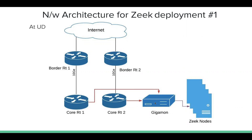Gigamon is a load balancing device that makes sure it sends the stream of one connection to one Zeek box, doing symmetric hashing - because Zeek has to see the complete connection stream. Gigamon was load balancing traffic to our other IDS systems and primarily our Zeek nodes. We had four production Zeek boxes as workers - they were receiving the stream from Gigamon, processing the packets, and passing the logs to a central location called the Zeek manager, a fifth box. That centralized manager would collect all the logs that the Zeek workers generated. This was the network architecture we deployed at UD.